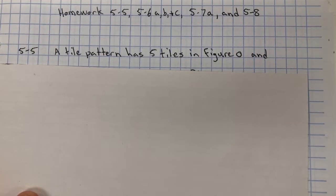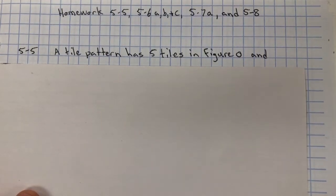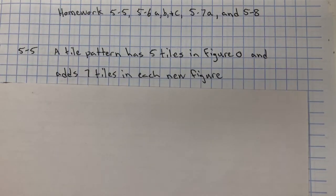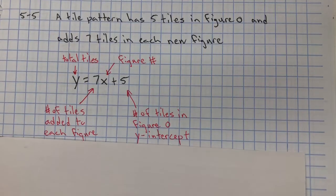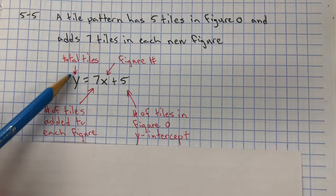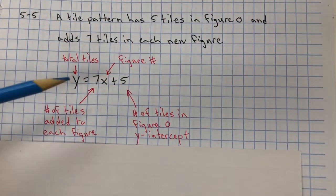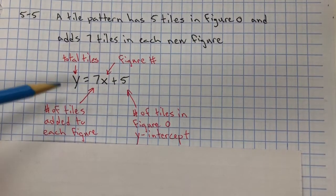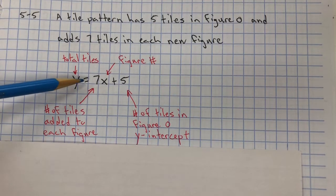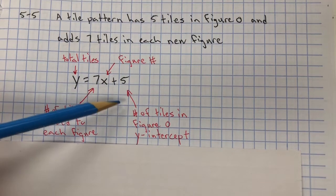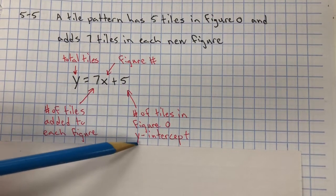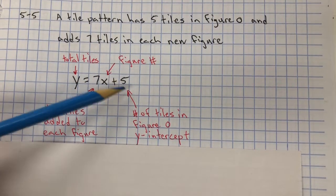For problem 5-5, you have a tile pattern that has five tiles in figure zero and adds seven tiles in each new figure. Y represents the total tiles, 7 represents the number of tiles added to each figure, X is the figure number, and 5 is the number of tiles in figure zero, your y-intercept or your initial value.